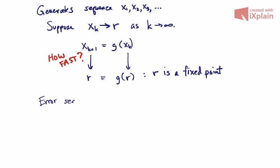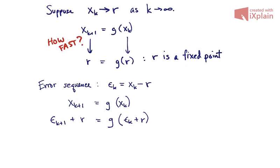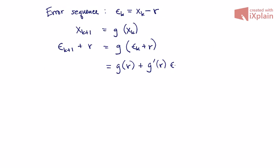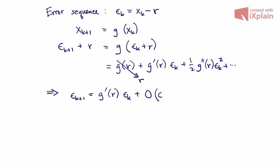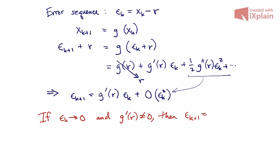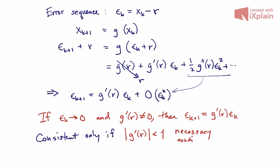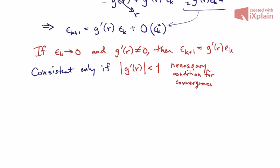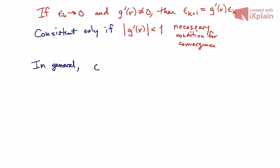How fast will the sequence converge to that fixed point? We take the errors — those differences should go to zero, and we want them to go to zero as fast as possible. We rewrite the fixed-point iteration in terms of the errors instead of the x's, and apply a Taylor expansion on the right-hand side. Since r is a fixed point, g of r equals r, so we get that epsilon_(k+1) is approximately g'(r) times epsilon_k. The conclusion is: if the errors go to zero and g'(r) is non-zero, then this is consistent only if the absolute value of g'(r) is less than 1. Otherwise, the errors would grow or stay the same size.